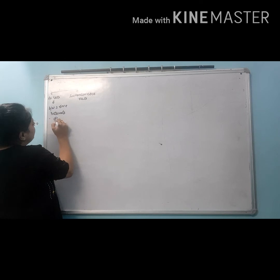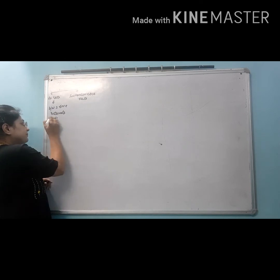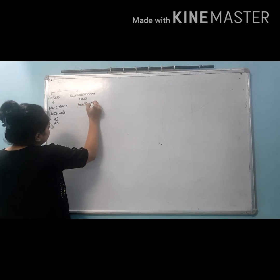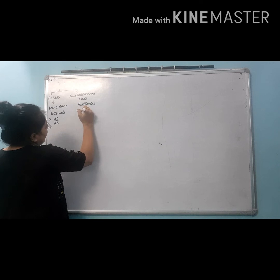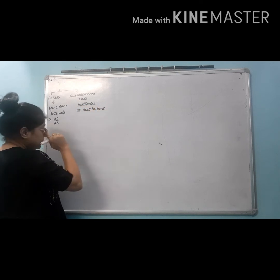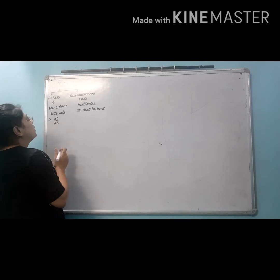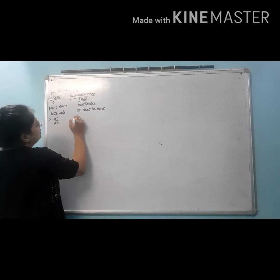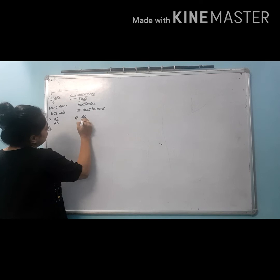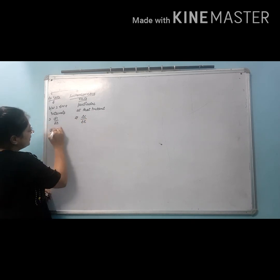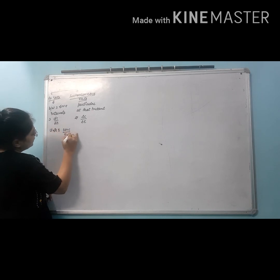We represent delta C by delta T. We have seen the particular rate at that instant. If you are talking about a particular time, then you will have an instantaneous rate, otherwise you will call it average rate. We denote delta C by delta T. If you are talking about the unit, the unit of concentration by time is done.